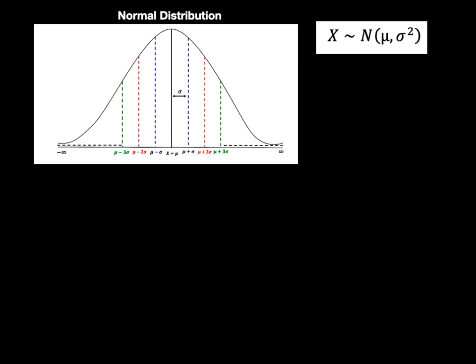Let's start first with the normal distribution. The normal distribution curve has the center line as x equal to mu. The three dotted lines on the right tail are mu plus sigma, mu plus 2 sigma, mu plus 3 sigma, which continue up to infinity, and on the left side are mu minus sigma, mu minus 2 sigma, mu minus 3 sigma, which continue up to minus infinity. We know that x follows normal with parameters mu and sigma squared, where the mean is mu and the variance is sigma squared.